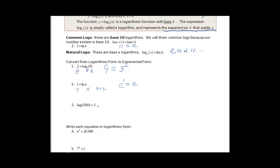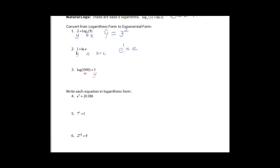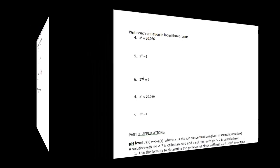If we see this log 1000 equal 3, again this is my y and this is my x. And then my base is not here. So we know that the base is 10. So we would say b to the y which is 3 is equal to x which is 1000. That should be 1000. So let's move on.